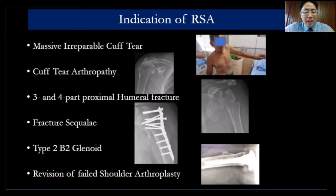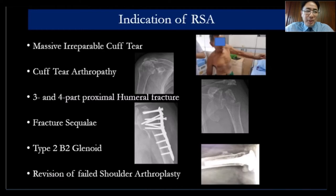The indications include massive irreparable cuff, cuff tear arthropathy, three- and four-part fractures, and fracture sequelae — which is becoming more and more common, especially in younger patients. Also B2 glenoid or revision surgery.